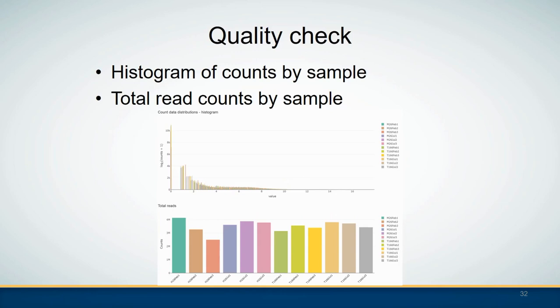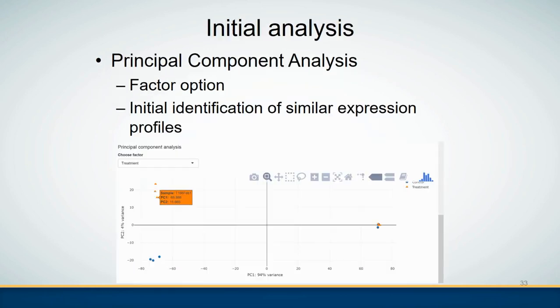IRIS also provides a histogram of counts by sample to explore the distribution of the counts, as well as the total read counts by sample. Some preliminary analysis tools are also provided — for example, principal component analysis can be performed to initially identify similar expression profiles as well as potential outliers from the dataset.